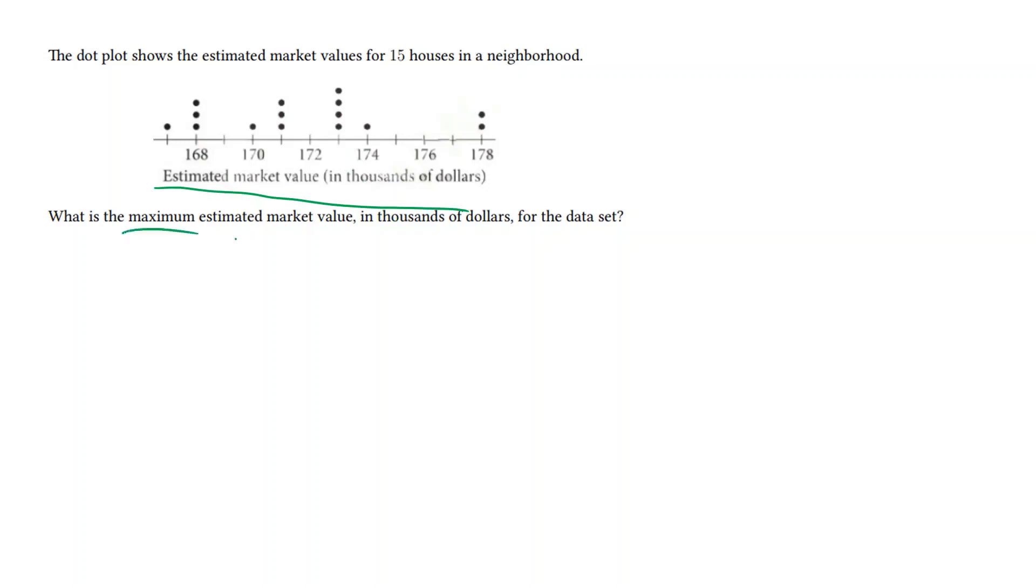We're interested in the maximum, and we see that the maximum data entry points are up here at 178k. Two such houses are there, and so we have 178 as our maximum estimated market value.